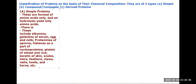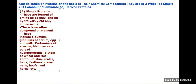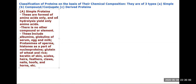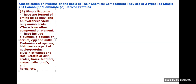There is no other compound or element in simple proteins. Examples include albumin — which is the white of eggs — and globulins of serum. Serum is found in blood.